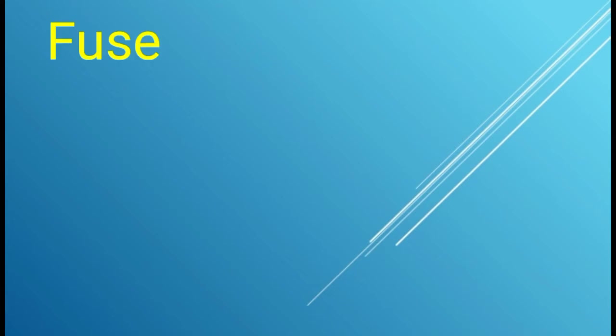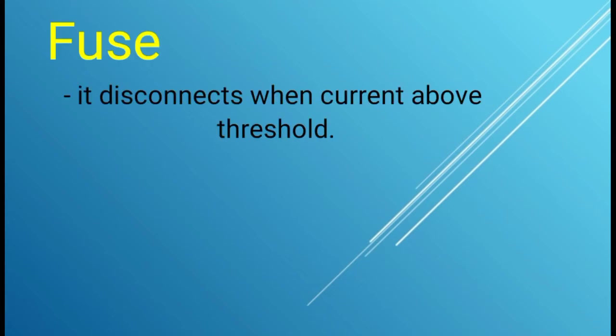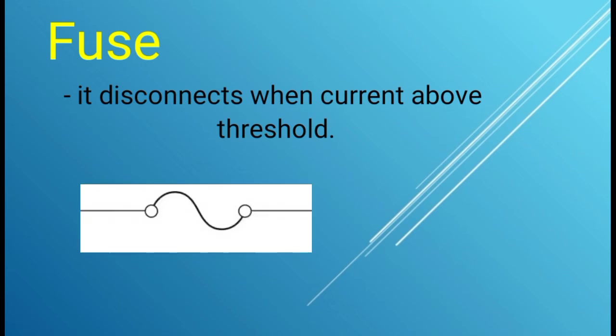Next, we have the fuse. It disconnects when current is above threshold. Fuse is used to protect circuit from high current. And this is the symbol and the example of a fuse. We use fuse not only in our house, but even in our appliances and even our car.